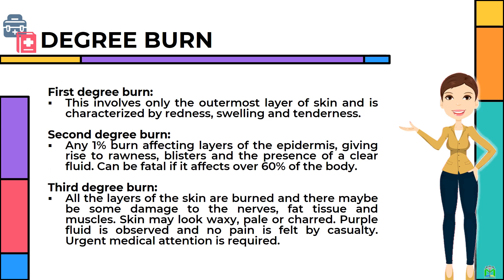First degree burn: involves only the outermost layer of skin and is characterized by redness, swelling and tenderness. Second degree burn: affects layers of the epidermis, giving rise to rawness, blisters and the presence of a clear fluid. Can be fatal if it affects over 60% of the body. Third degree burn: all layers of the skin are burned and there may be some damage to the nerves, fat tissue and muscles. Skin may look waxy, pale or charred. Purple fluid is observed and no pain is felt by the casualty. Urgent medical attention is required.